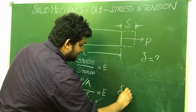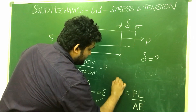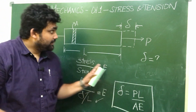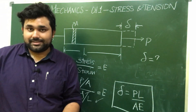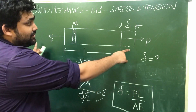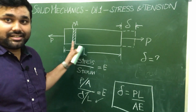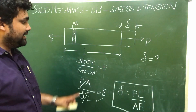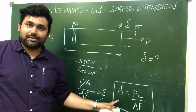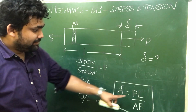Rearranging the formula, delta becomes PL by AE. So, for a prismatic bar freely suspended, when an axial load P is acting on it, A is the cross-sectional area, P is the force acting on it, E is Young's modulus, and L is the actual length — the total elongation for that material will be delta equals PL by AE.